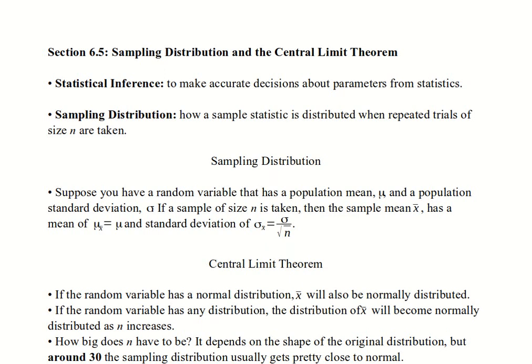And that sounds like we're in a statistics course, so let's translate those two words into what we really care about. Parameters come from populations, statistics come from samples. So let's say this again. Statistical inference means that we want to be able to make accurate decisions about populations from samples.